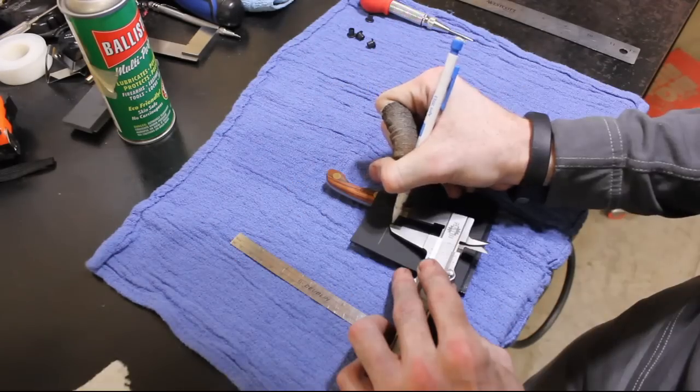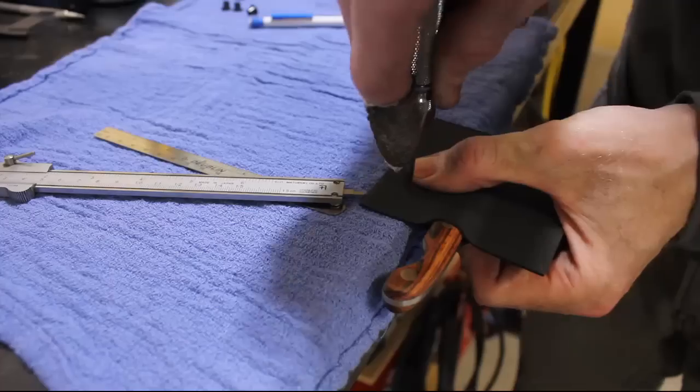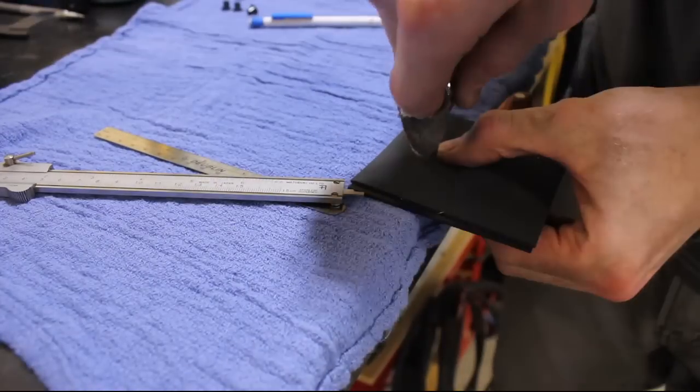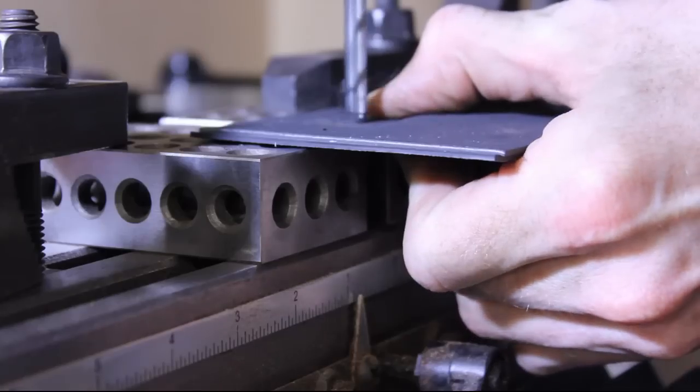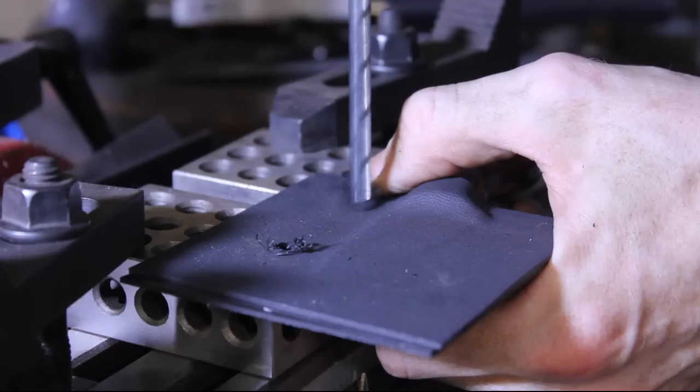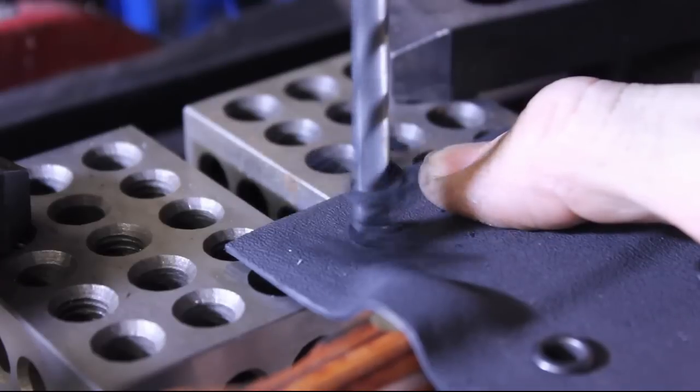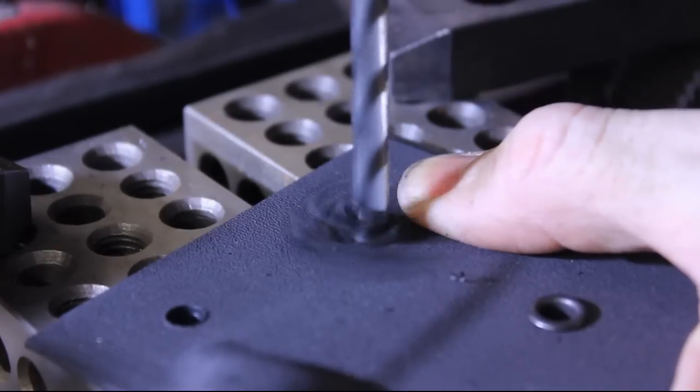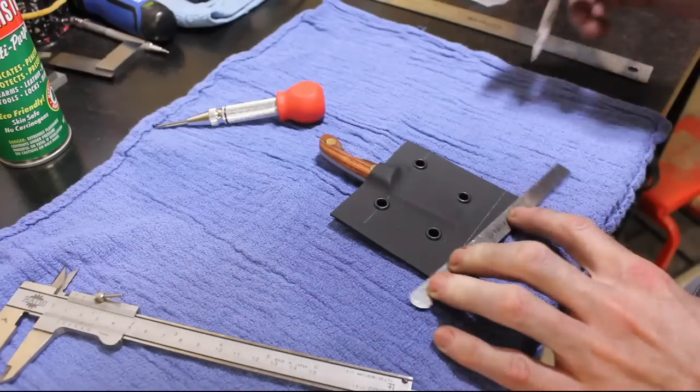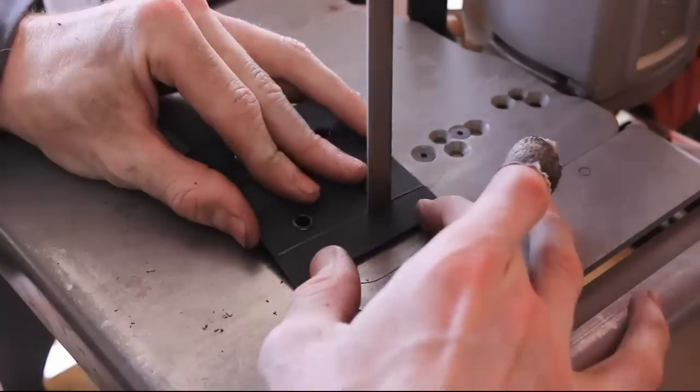Pretty simple sheath for this knife. Only four eyelet holes for the necklace. Drill the holes, put the eyelets in, mask out the profile of the sheath. Then cut it out on the bandsaw and get to grinding.